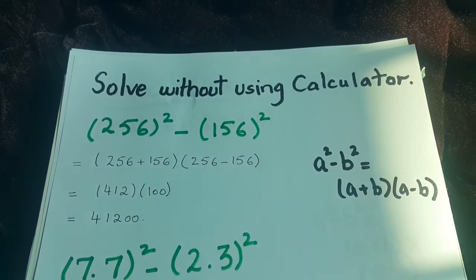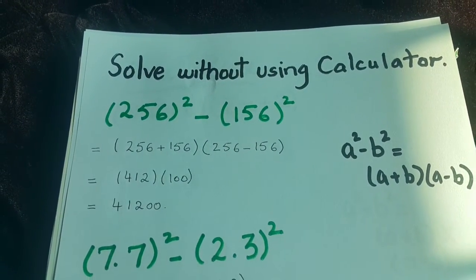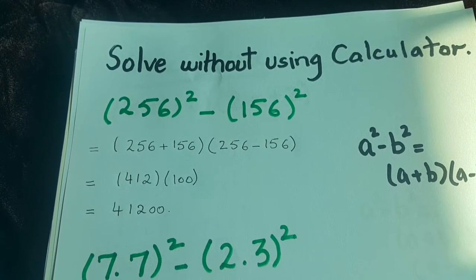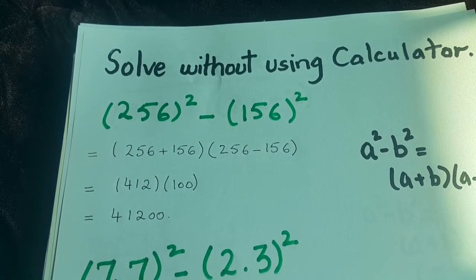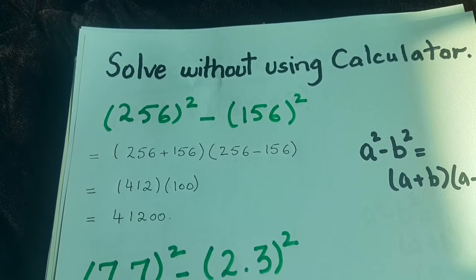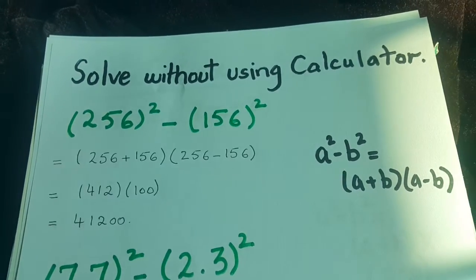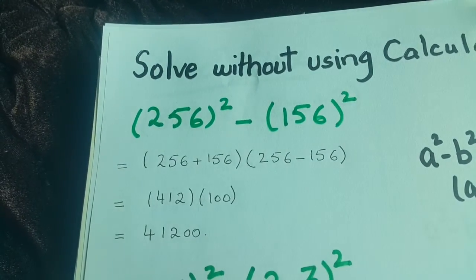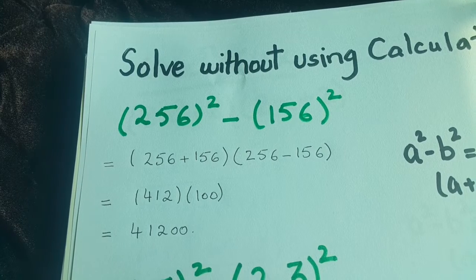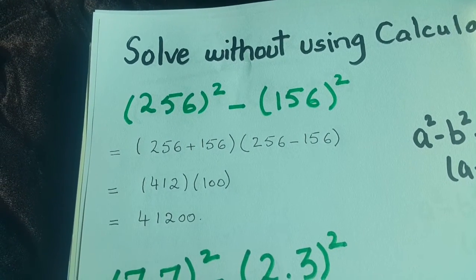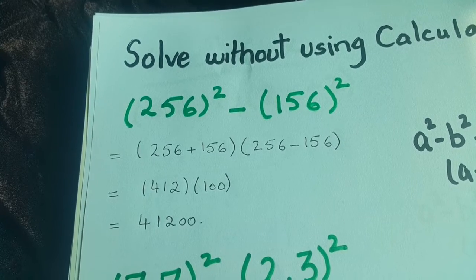Solving without using a calculator. Now we have a question: 256 squared minus 156 squared. What we will do is solve it by using the formula a squared minus b squared equals a plus b into a minus b. So 256 plus 156 multiply by 256 minus 156.